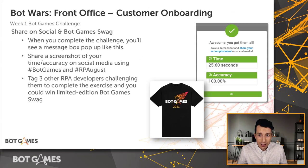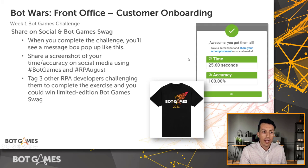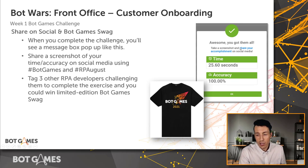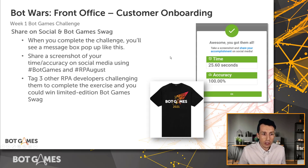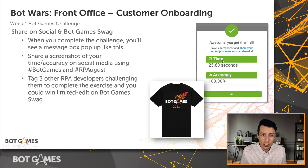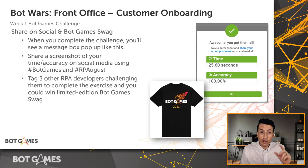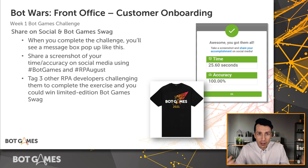Ideally, after you've completed the challenge, you get a modal that looks like this one — it will say you've completed the challenge, this is the time that it took you, and this is your accuracy. Notice it also has a link to share your accomplishment on social media. What we want you to do is share a screenshot of your time and accuracy, and use the hashtag bot games and hashtag RPA August — very clever hashtags, if I might say so myself. Use both of those on social media, and tag three other developers who you challenge to also complete this RPA challenge exercise.